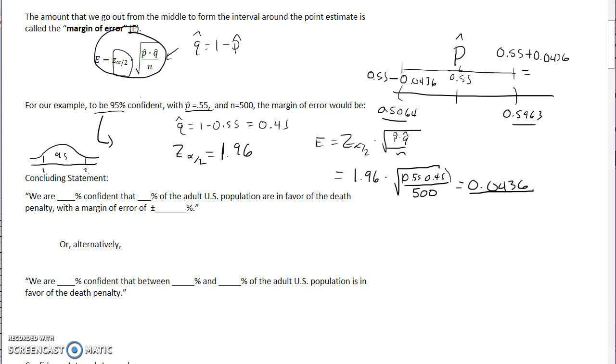Now, how would we write a final answer? We would say we are 95% confident that blank percent of the U.S. adult population are in favor of the death penalty within a margin of error of plus or minus. Okay, so this time they want our point estimate. So we would say 55% of the U.S. adult population are within a margin of error of,